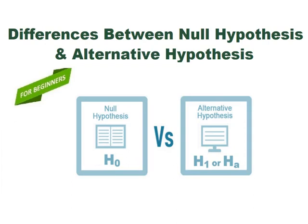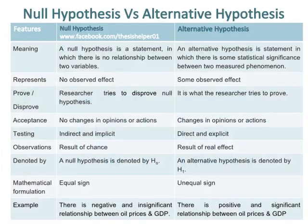A null hypothesis is a statement in which there is no relationship between two variables, while an alternative hypothesis is a statement in which there is some statistical significance between two measured phenomena. A null hypothesis represents no observed effect, while an alternative hypothesis represents some observed effect.